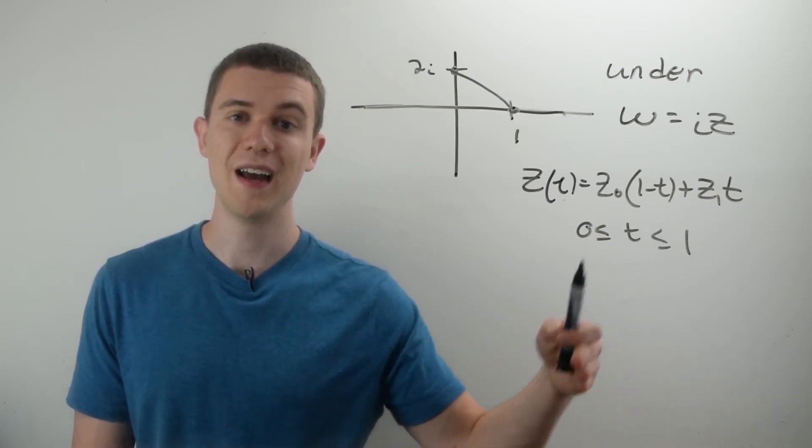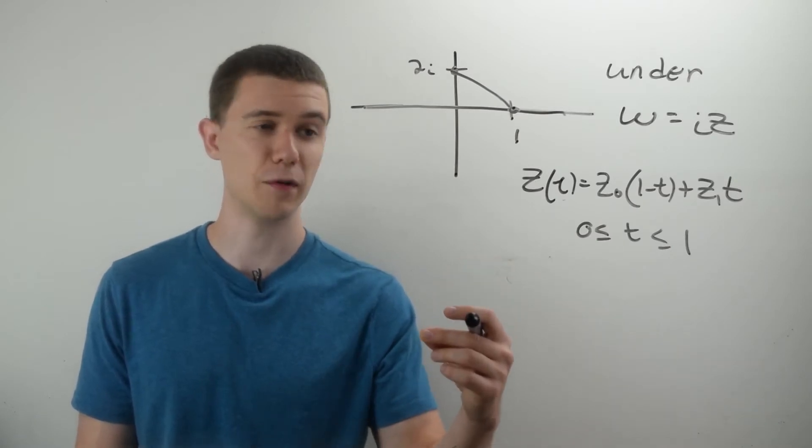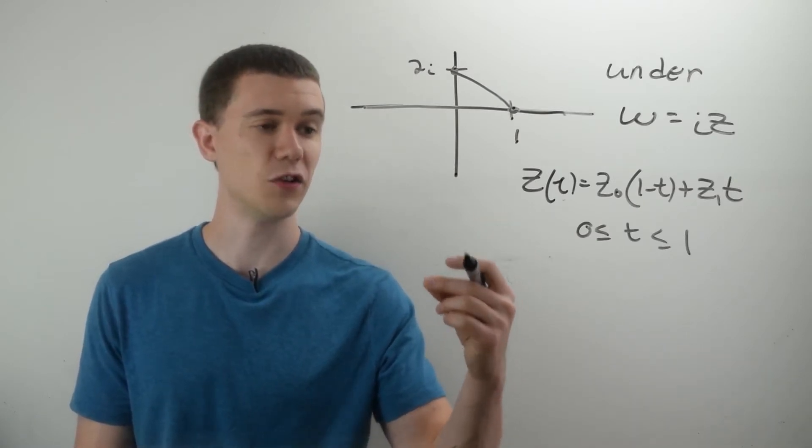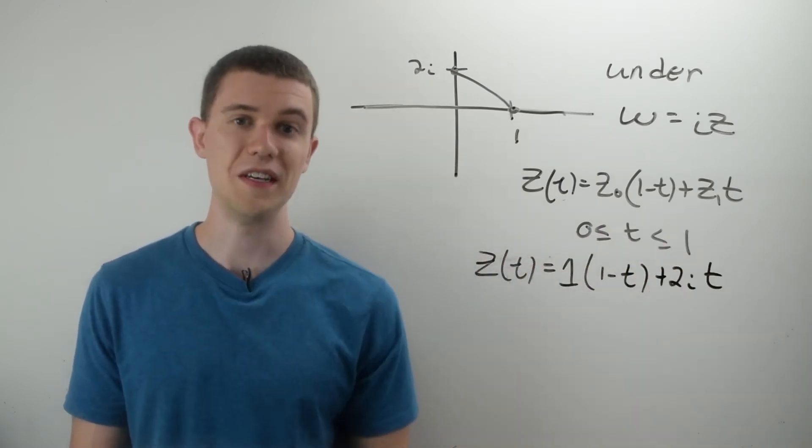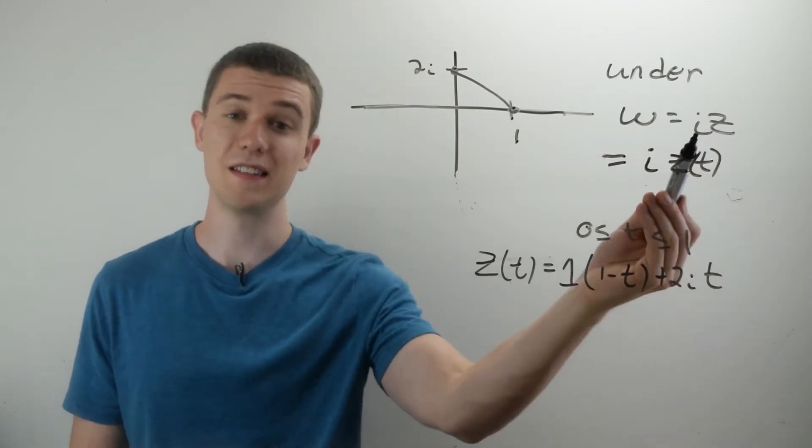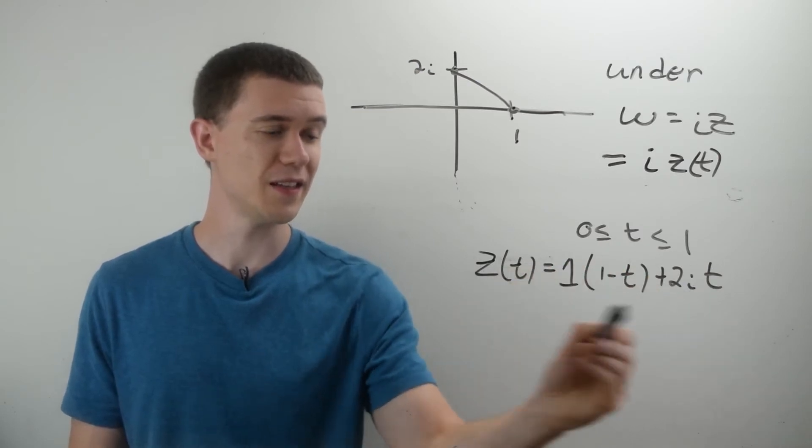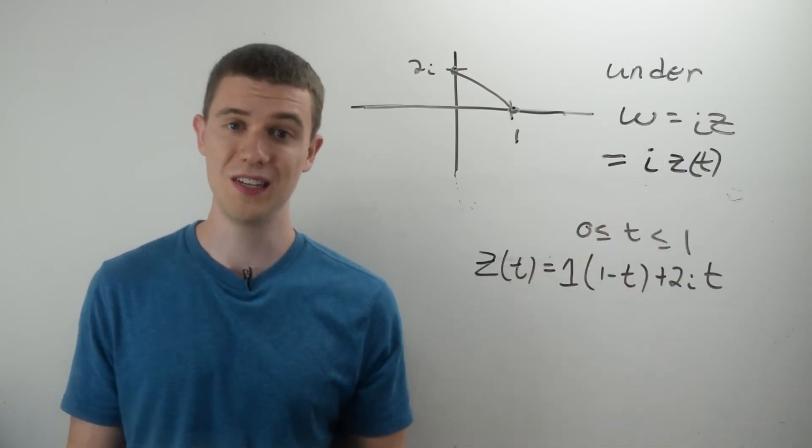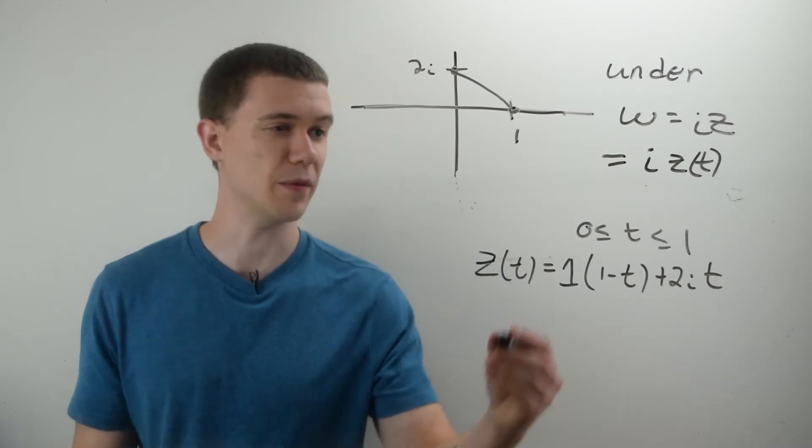That means the parameterization of this line segment, which starts at 1 and ends at 2i, will be this, for T varying between 0 and 1. Now what I can do, since I'm defining Z to be a function of T, I'll just replace this equation in for Z, and then I'll be able to rearrange things, and we'll be able to graph the image.